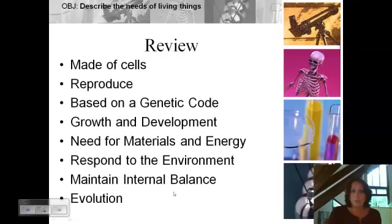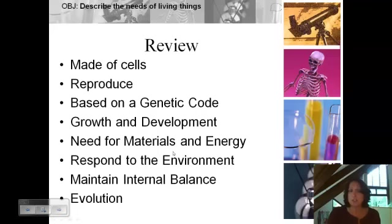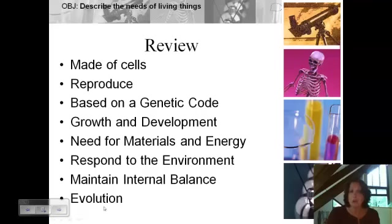So this is a review of what we went over. All living things are made of cells. All organisms need to be able to reproduce, sexually or asexually. All organisms are based on a genetic code held in their DNA — in the form of A's, T's, C's, and G's. All organisms need to grow and develop — increase in size and change. All organisms need to take in materials and energy to make and replace body parts and to carry out their activities. All organisms need to respond to their environment. And then they need to maintain an internal balance, or homeostasis.